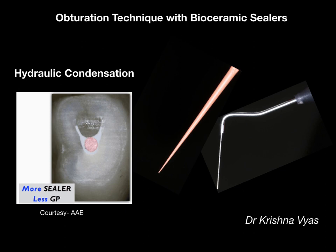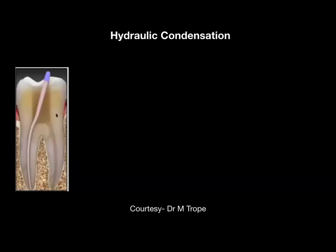One important point: previously we used regular gutta percha points, but now BC-coated points are available and are preferred. These are immersed and coated with nanoparticles of bioceramics, which gives better bonding and increased fracture resistance. Bioceramic-coated gutta percha points are always preferred.